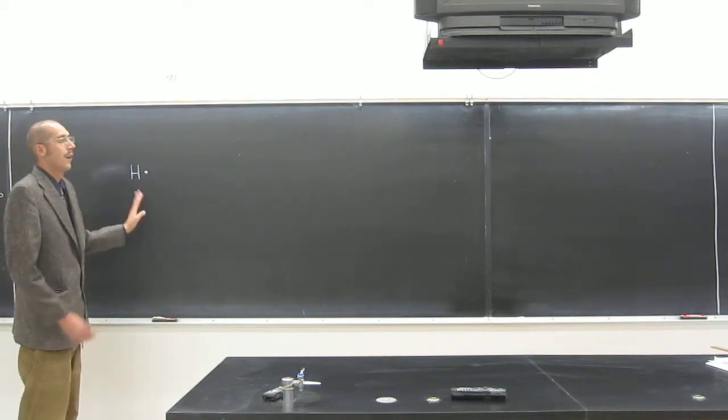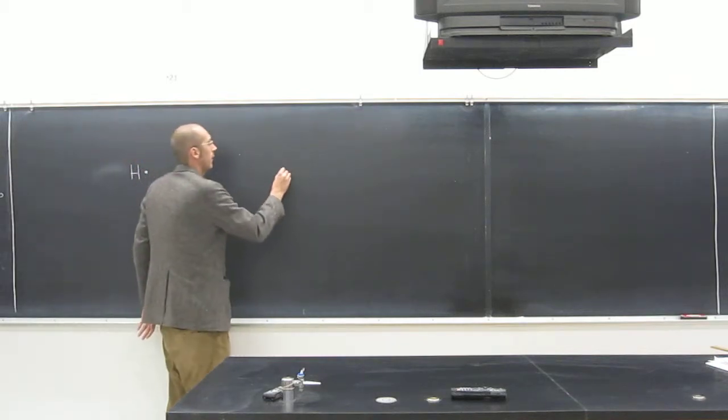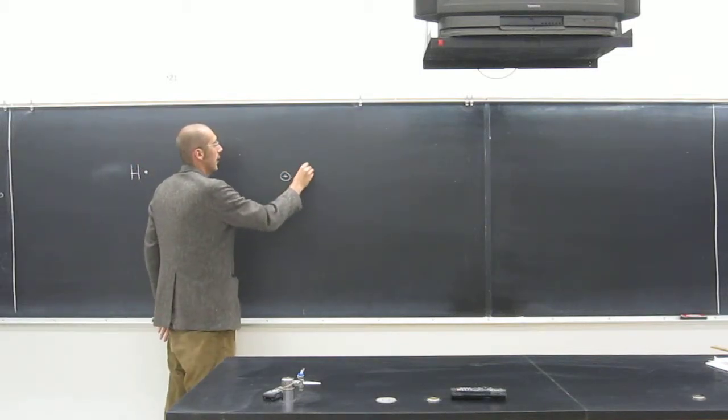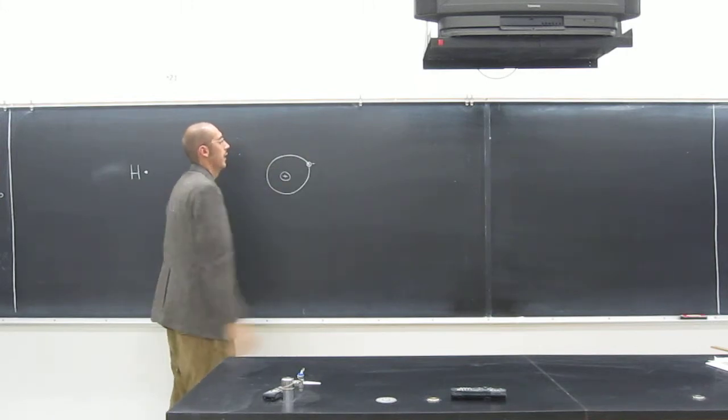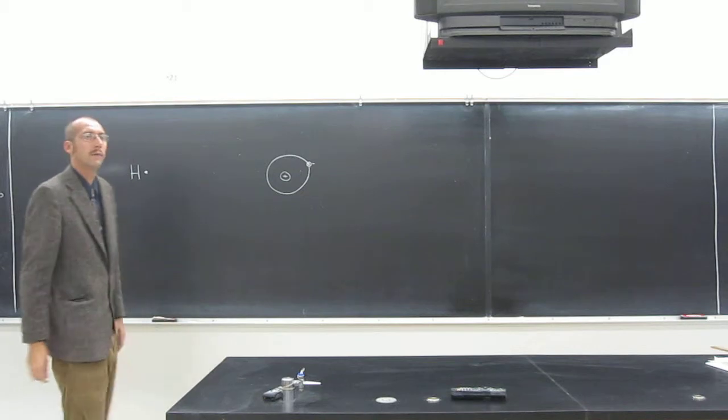So if you wanted to do, like, that planetary model of an atom, you could say hydrogen looks something like this, with its electron there, its proton there.